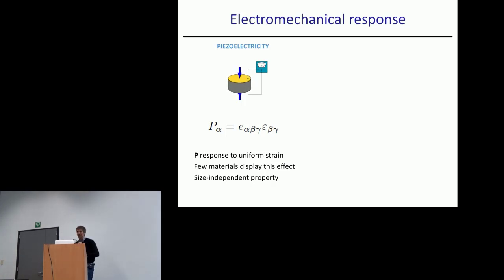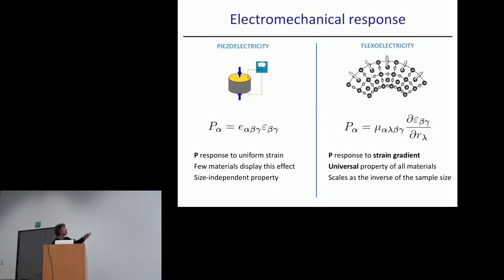Flexoelectricity: piezoelectricity is a property we all know, and the first order dispersion counterpart of piezoelectricity is flexoelectricity, which is the polarization response of an insulating crystal to a strain gradient. It's a fourth-rank tensor, so it's a universal property of all materials. Unlike piezoelectricity, you don't need a microscopic breakdown of inversion symmetry. It also scales at the inverse of the sample size—you can bend a material more if it's thinner, so it's gained interest with nanotechnology.